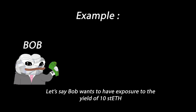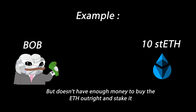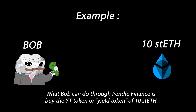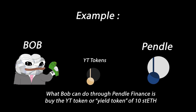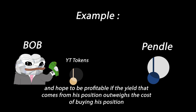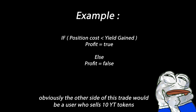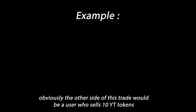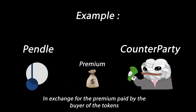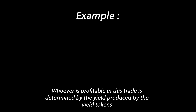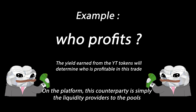Let's say Bob wants to have exposure to the yield of 10 STETH but doesn't have enough money to buy the ETH outright and stake it. What Bob can do through Pendle Finance is buy the YT token, or yield token, of 10 STETH and hope to be profitable if the yield that comes from his position outweighs the cost of buying his position. The other side of this trade would be a user who sells 10 YT tokens in exchange for the premium paid by the buyer. Whoever is profitable in this trade is determined by the yield produced by the yield token, and on the platform, this counterparty is simply the liquidity providers to the pools.